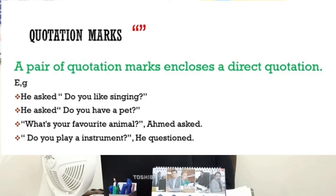The next one is quotation marks. A pair of quotation marks encloses a direct quotation. For example: 'He asked, "Do you like singing?"' Inverted commas are basically used for the character's exact wording. For example: 'He asked, "Do you have a pet?"' 'Ahmed asked, "What's your favorite animal?"' 'And do you play an instrument?' So inverted commas are used when the actual wording of a character is spoken.